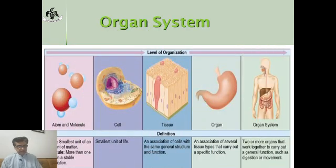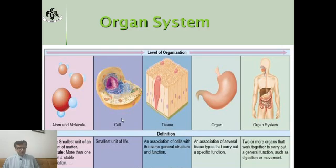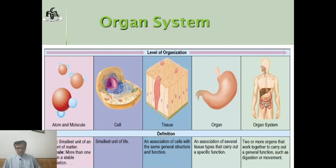Regarding organ systems — in grade 6 you have studied about these things. The cell is the structural and functional unit of the body. When cells combine and form a group that performs the same function, that is called tissue — like muscular tissue, epithelial tissue, etc. When tissues combine, they form an organ, such as the stomach, which contains different kinds of tissues. When organs combine, they form a system — like the digestive system, whose organs include the stomach, esophagus, and oral cavity. When different systems combine, they form a full organism.